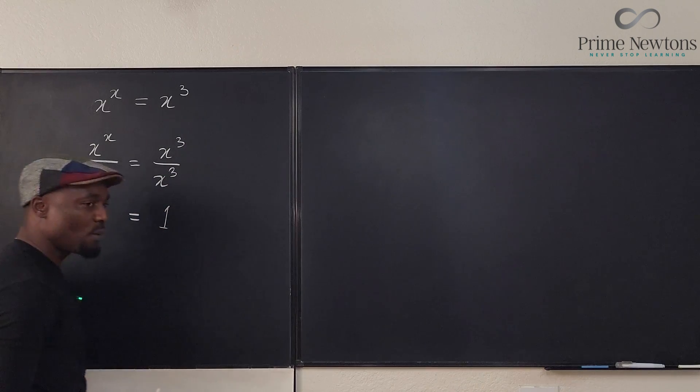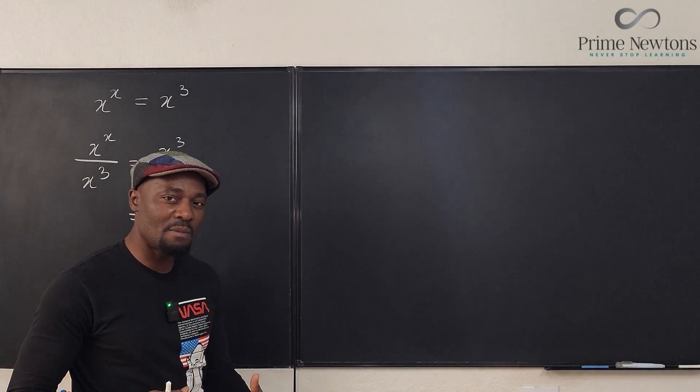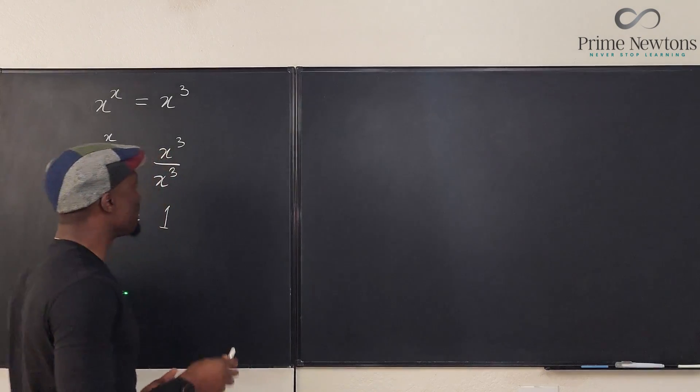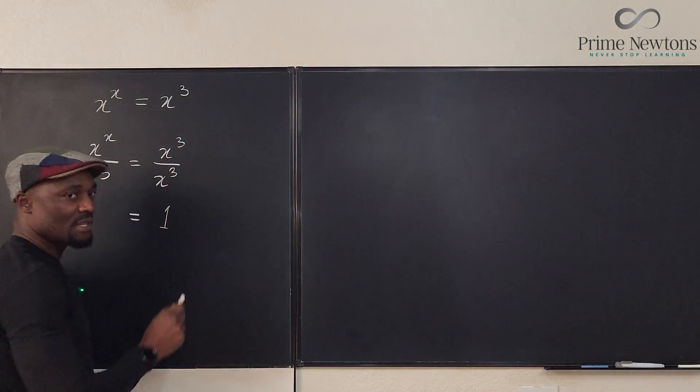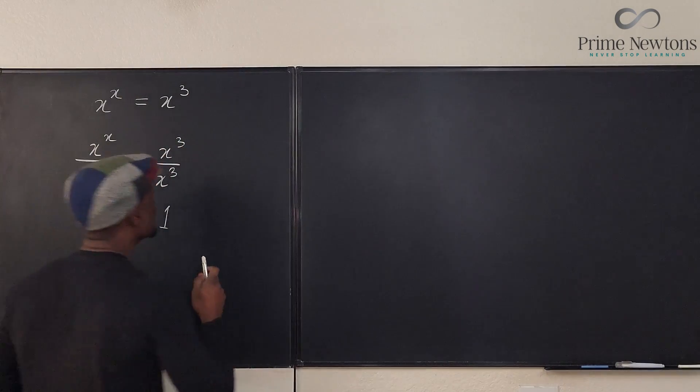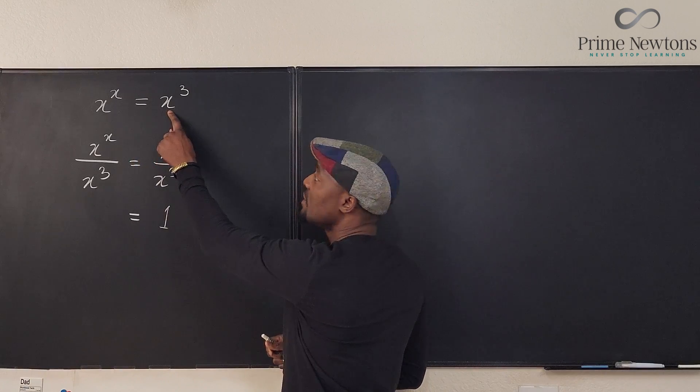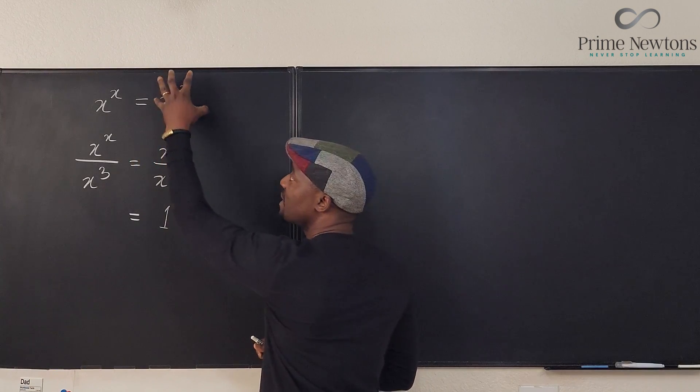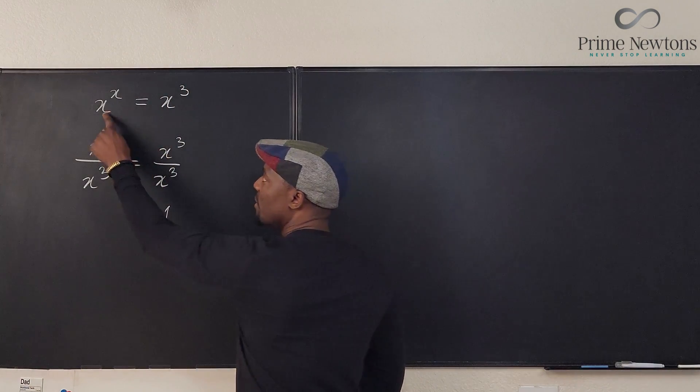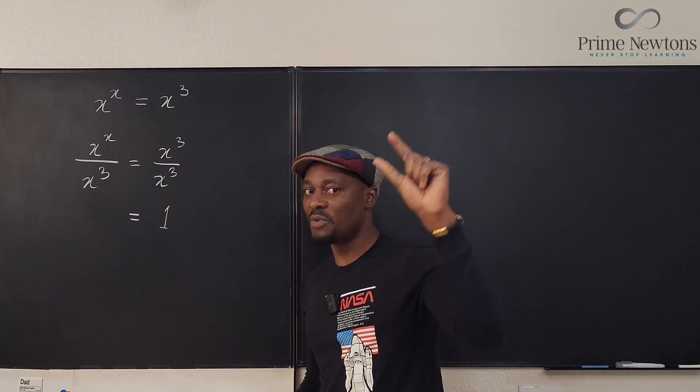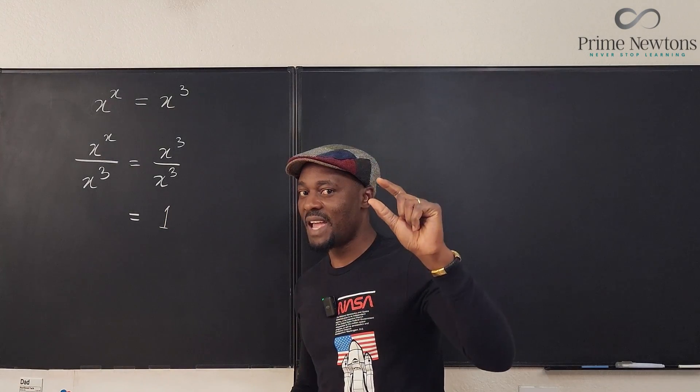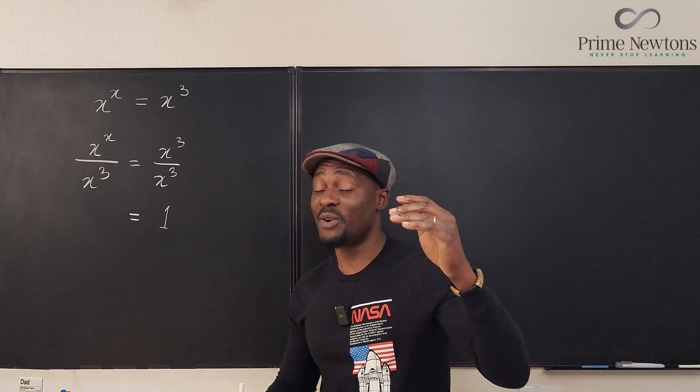Why was I so confident in dividing? It's because I know that this cannot be zero, because assuming this is zero it will be zero to the third which makes this side zero. But on the left hand side I'm going to have zero raised to power zero.